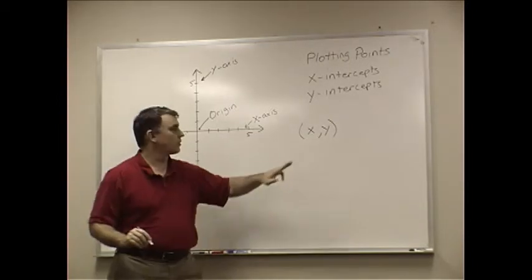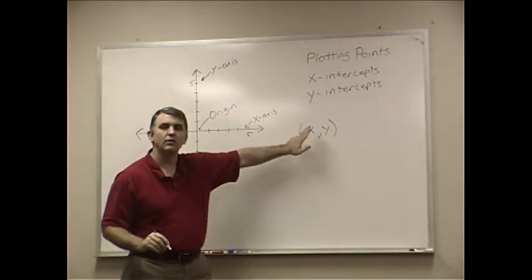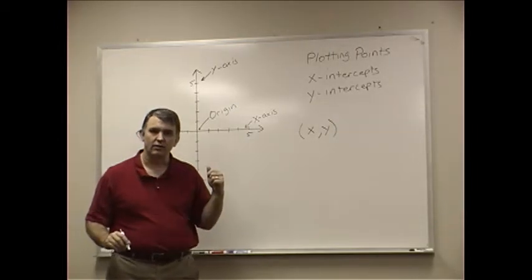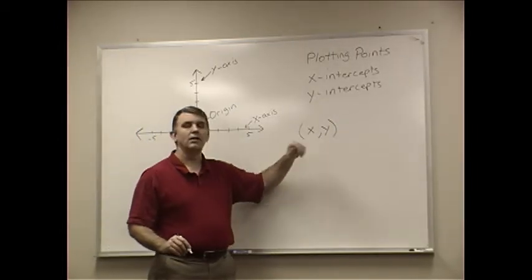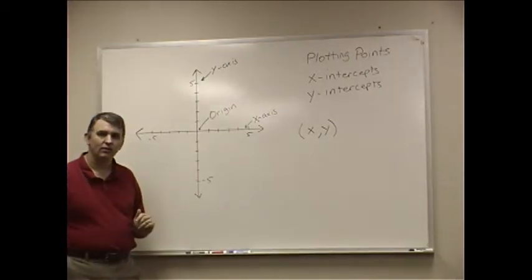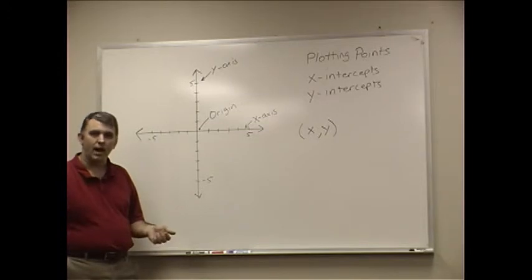The first thing in here is the x. It tells you where to go on the x-axis. The second number is the y. It will tell you where to go on the y-axis. And that's how you basically plot points.